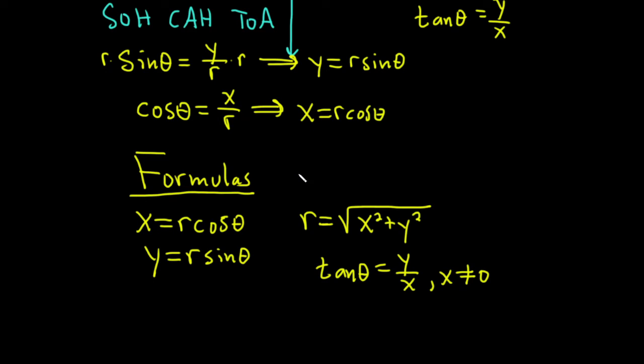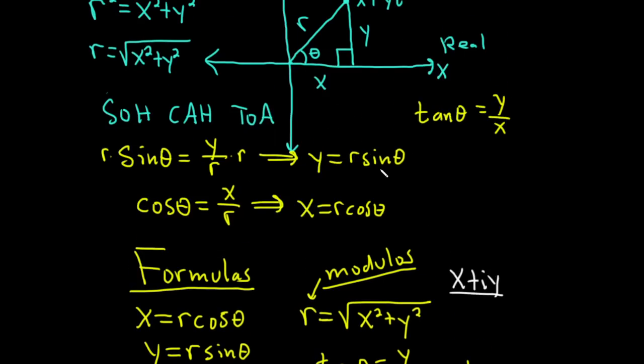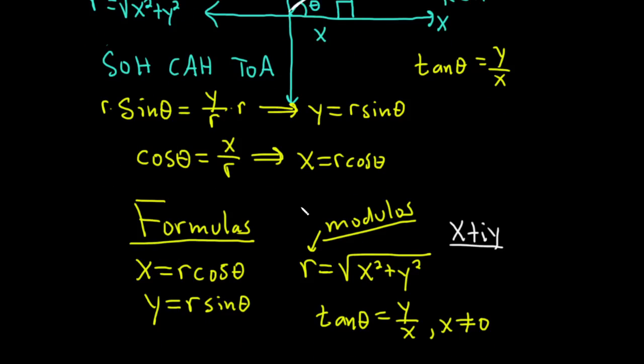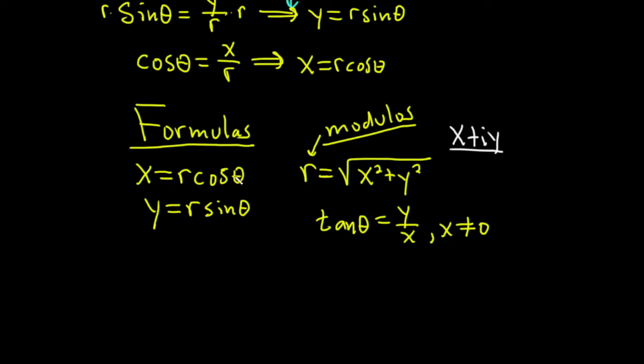r has a name. r is called the modulus of the complex number. Remember, our complex number here is x plus iy. So the modulus of that would be this. If you think about it geometrically, the modulus is just the length of this vector. So if you think of this as a vector, it would be the length of this vector. That's the modulus. Pretty cool. So the magnitude of the vector created of the vector with endpoint being a complex number.